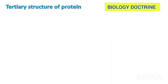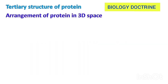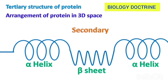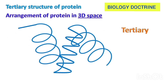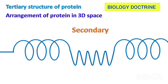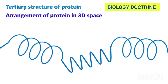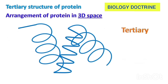Now let's see the tertiary and quaternary structures in animation. The tertiary structure of protein is basically the arrangement of proteins in three-dimensional space. The primary structure is a straight-chain polypeptide linked by peptide bonds. It further coils into spirals, which is called alpha helix, or folds into beta-pleated sheets.